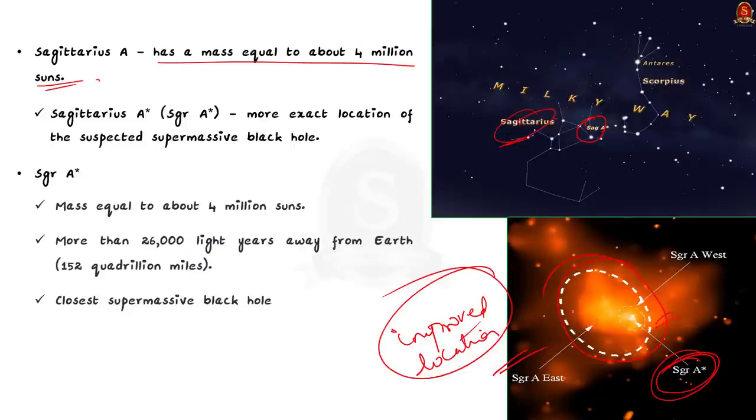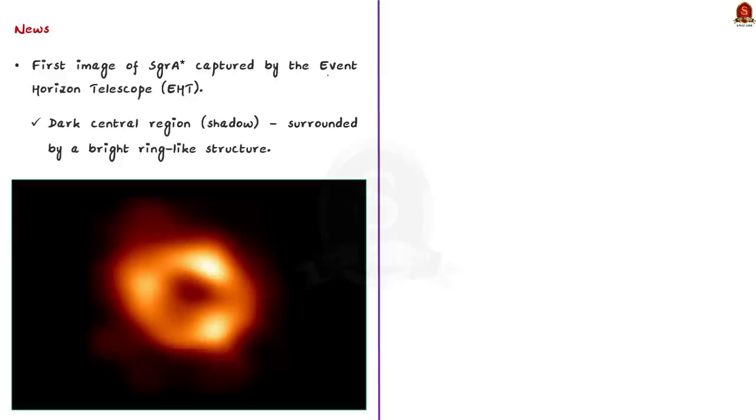So now, the Sagittarius A star is the one that has a mass equal to about 4 million suns. It is more than 26,000 light years away from Earth. That is, it is 152 quadrillion miles away. Also, Sagittarius A star is our closest supermassive black hole. And now, the news is that the Event Horizon Telescope has captured the first image of this Sagittarius A star. In the image, we cannot see the black hole itself because it is completely dark. But there is a glowing gas around it which is revealed in the image.